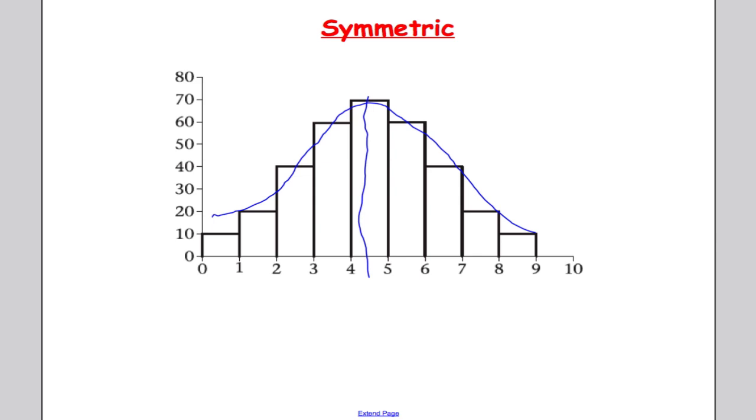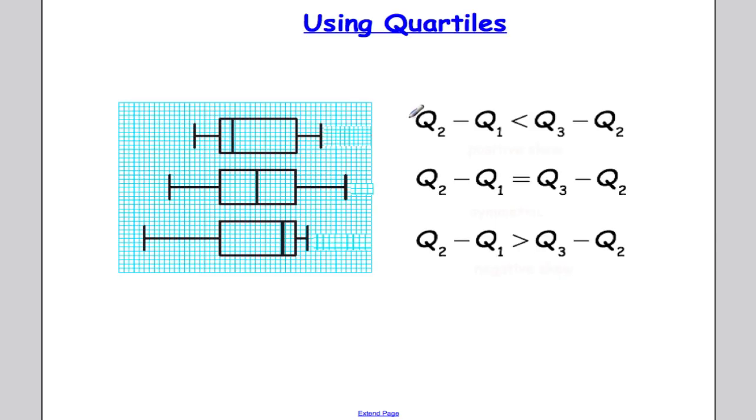Now the diagram is one way of looking at skewness, but another way is by using quartiles. I've got some quartiles here and box and whisker plots to show you what's going on. The first one here, we can see the median is very close to the lower quartile.